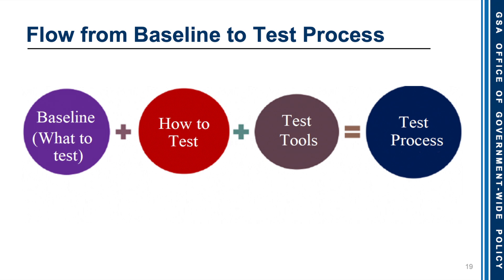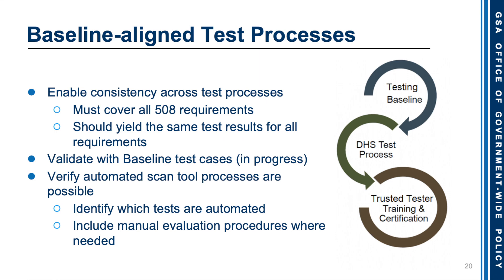The flow from the baseline to a test process is represented here. We have the baseline — what to test — plus how to test, plus the specific testing tools used in how to test, and that equals our test process. Baseline-aligned test processes enable consistency across test processes as they must cover all 508 requirements and should yield the same test results for all requirements. They validate with baseline test cases, which are in progress, and verify that automated scan tool processes are possible by identifying which tests are automated and including manual evaluation procedures where needed.